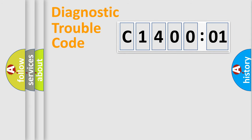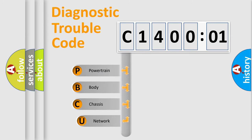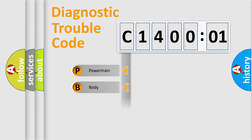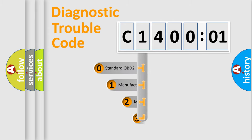First, let's look at the history of diagnostic fault code composition according to the OBD2 protocol, which is unified for all automakers since 2000. We divide the electric system of the automobile into four basic units: Powertrain, Body, Chassis, and Network. This distribution is defined in the first character of the code.